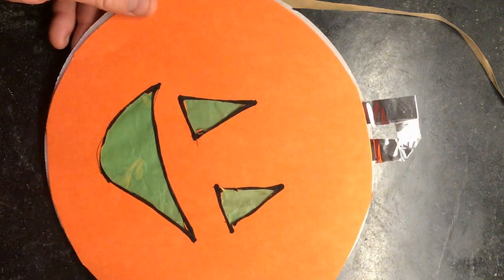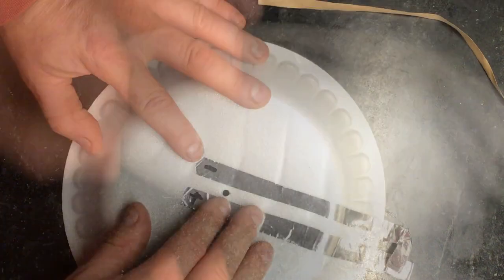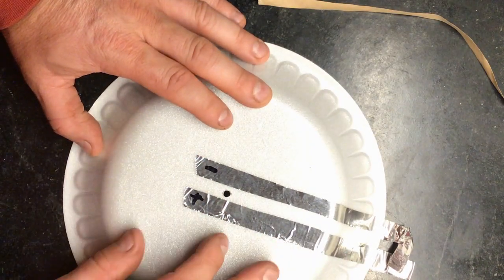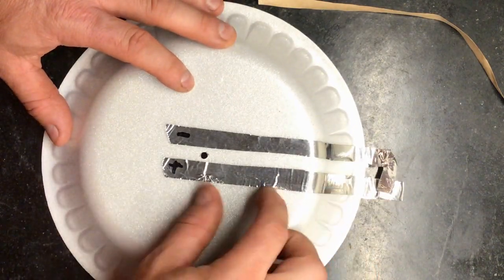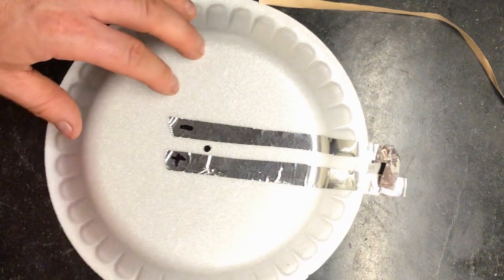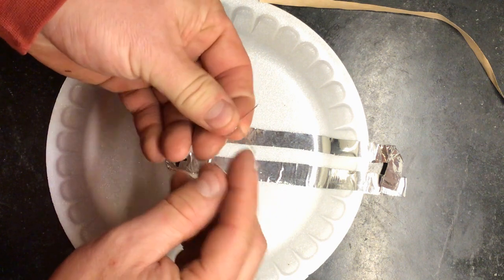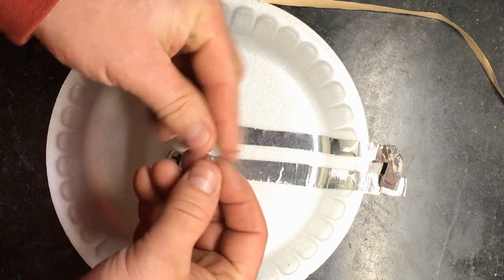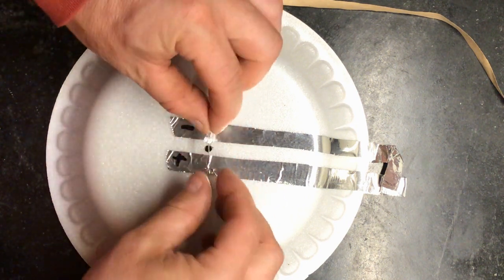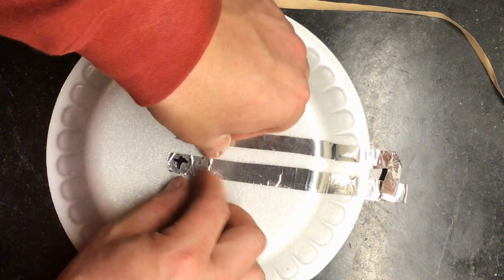And I'm almost ready to see if this thing lights up. Now there's a reason why we like to put the metal tape down first is because it makes a better contact with the LED legs. So I'm going to keep in mind that this is the longer leg. I'm going to bend them both so that when I stick that LED light through the plate,